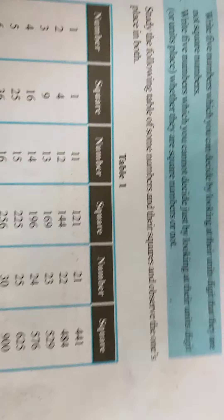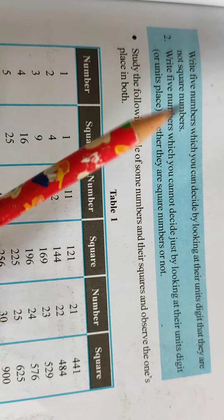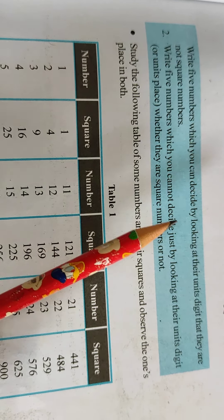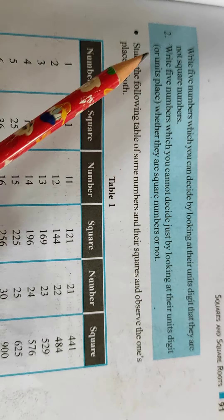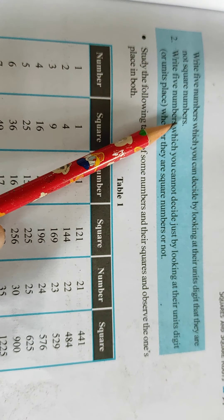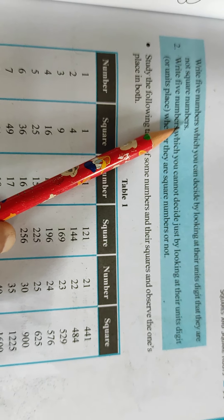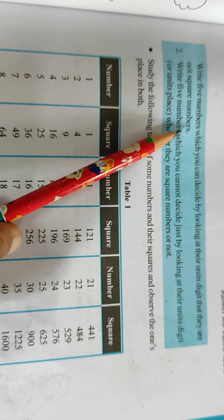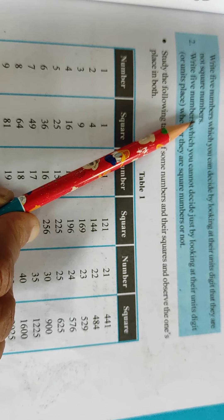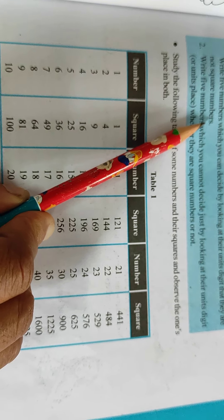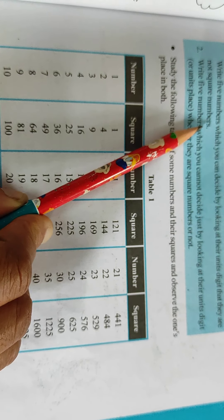Write 5 numbers which you can decide by looking at their unit digit that they are not square numbers. The digit must be at unit place 2, 3, 7, or 8.